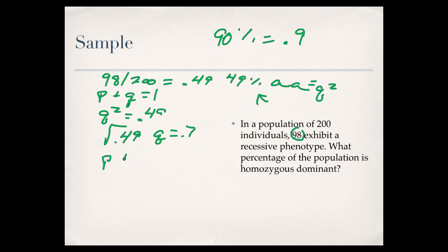We know that, again, P plus Q is equal to 1. So, P plus 0.7 is equal to 1. So, this means that P is equal to 0.3.